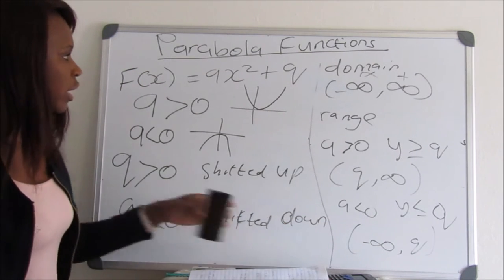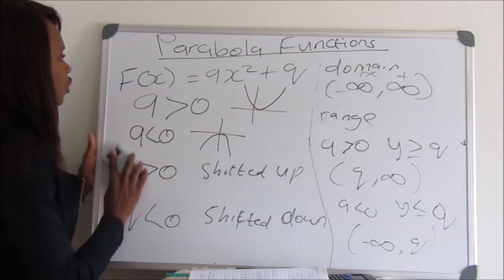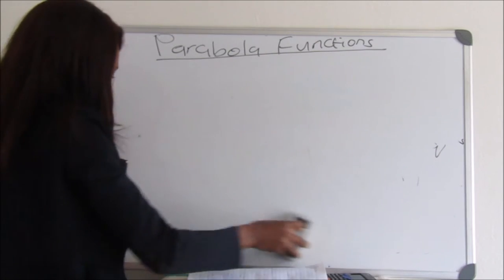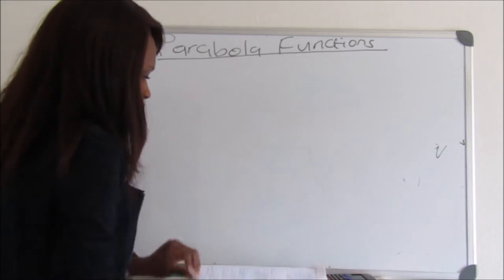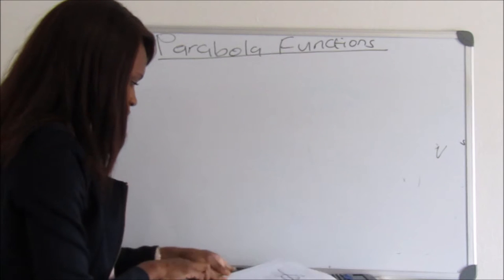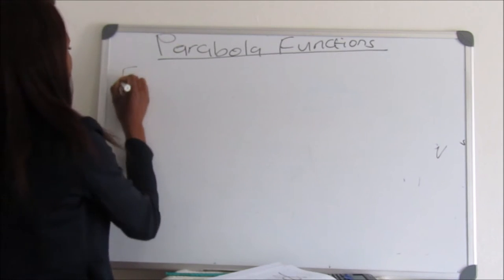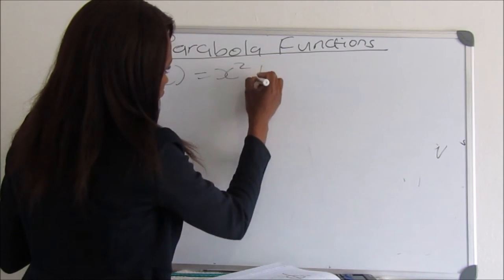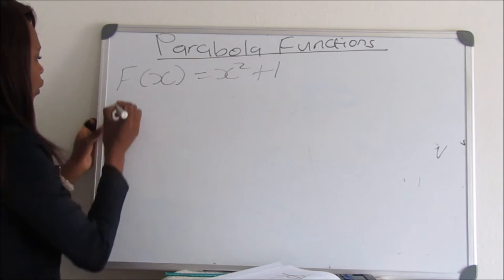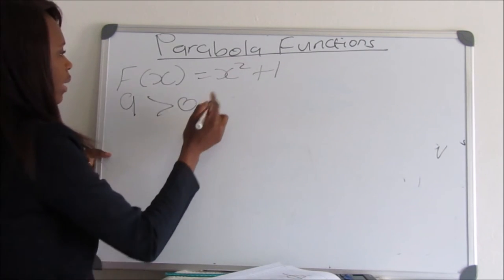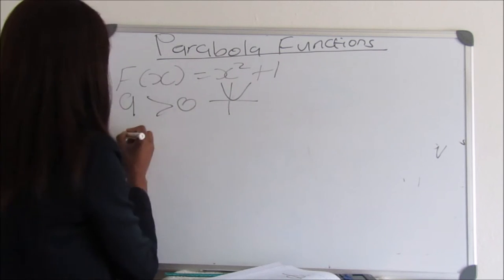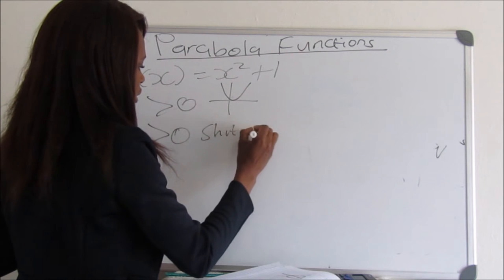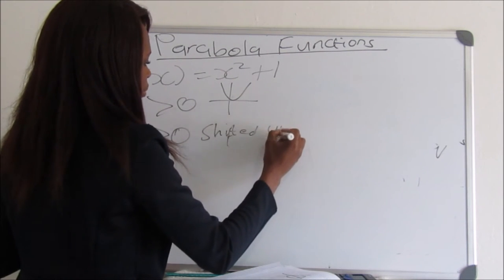Let's look at one question and apply all this. Given the standard equation f(x) = x² + 1, we can already see that a is greater than zero, so the graph will open upward. And q is also greater than zero, which means the graph was shifted upward.